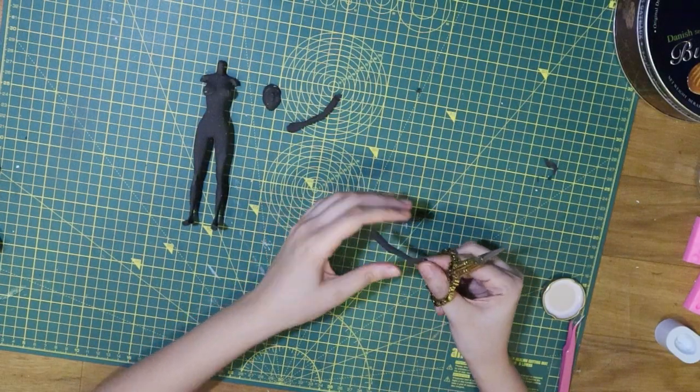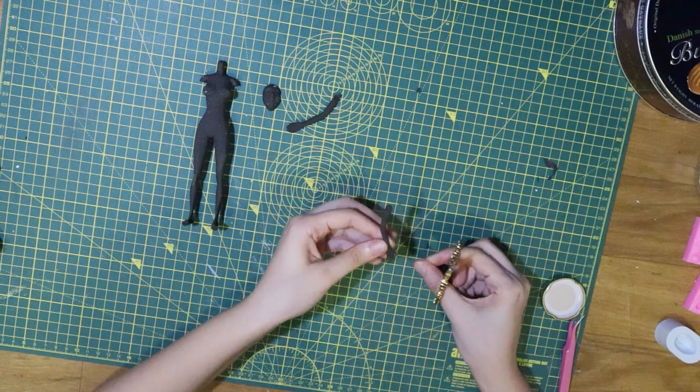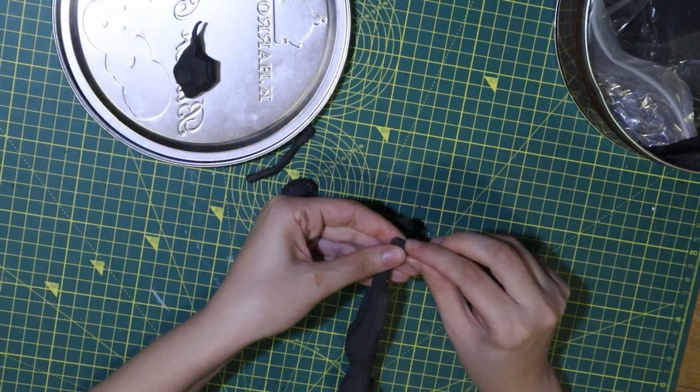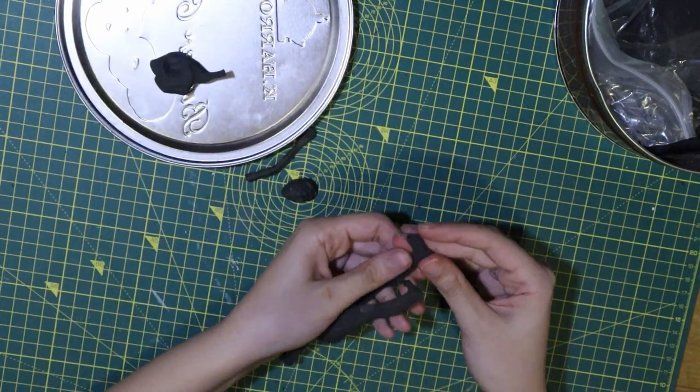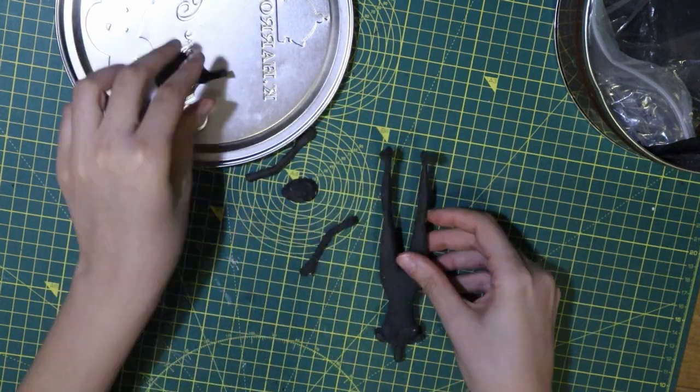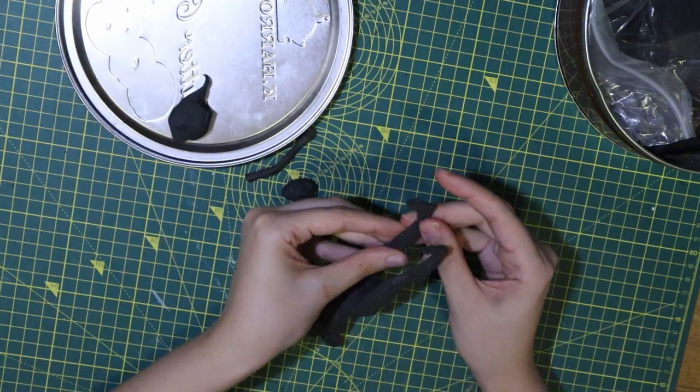I use scissors to cut any excess material I may have. The foam easily sticks to itself, so I fill in any gaps I can find with more foam and let it dry again.